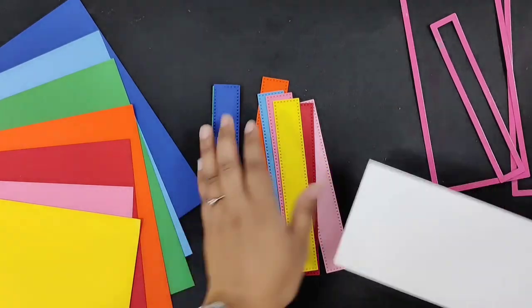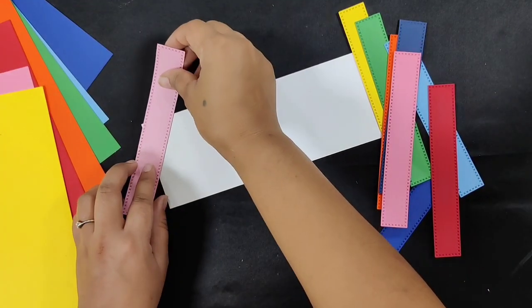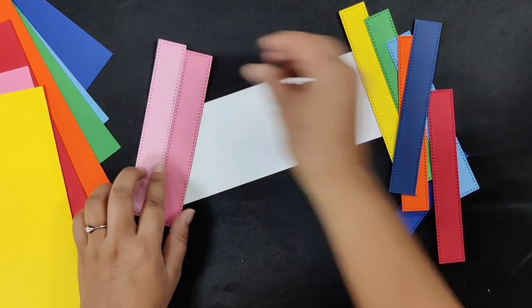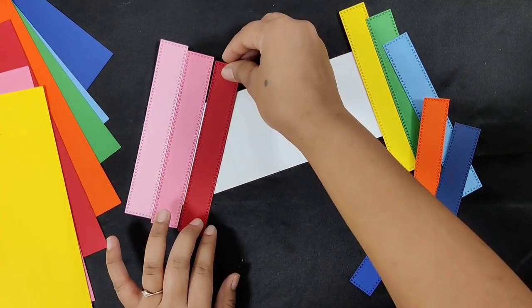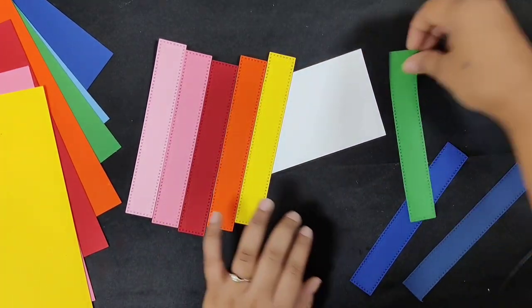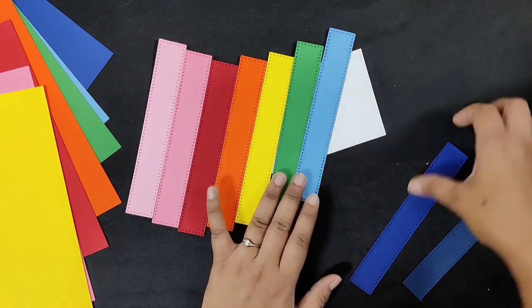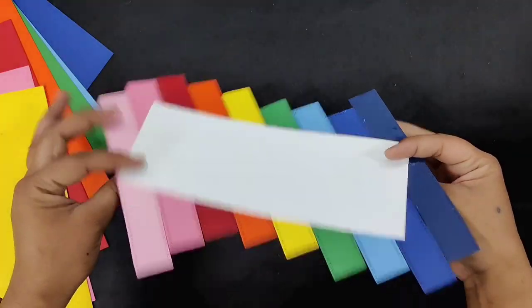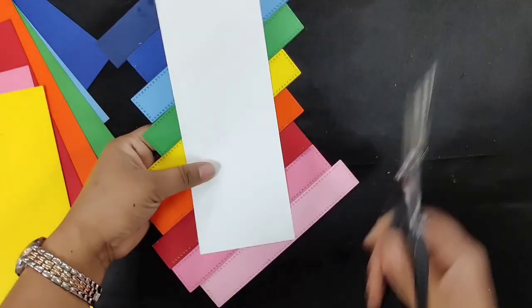Take the white die cut panel we made earlier. Take the colorful die cuts and arrange them diagonally on the white base. Adhere them in place using liquid glue and trim off the excess.